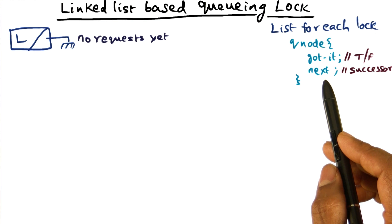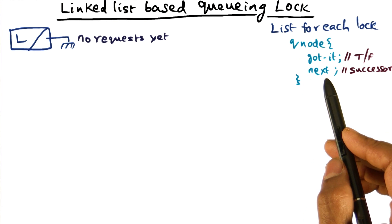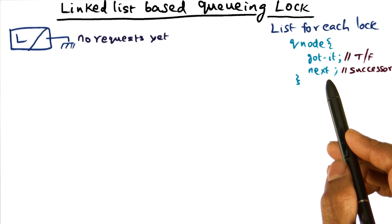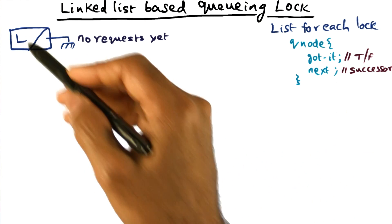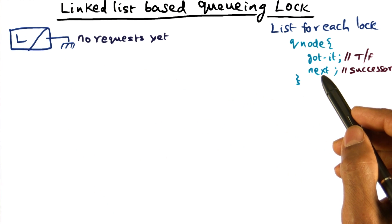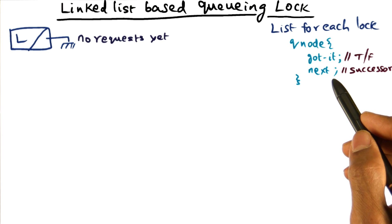The next field in the queue node is pointing to my successor in the queue. If I came in and requested the lock, I get into the queue. If a successor comes along and requests the lock, he gets queued up behind me. That's the basic data structure.